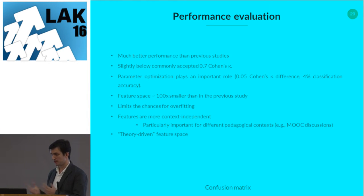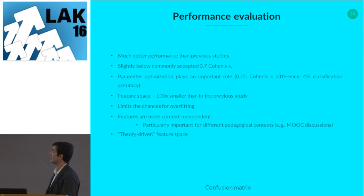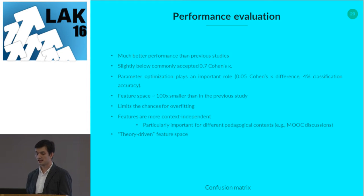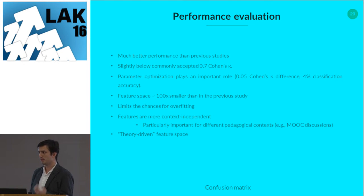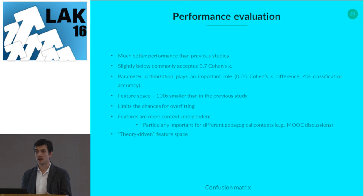Looking at overall performance, we see much better results than previous studies. We're very close to kappa 0.7, considered the acceptable level of coding agreement for practical use. Parameter optimization played an important role — contributing about a 0.06 kappa difference. The feature space was about 100 times smaller: previous work had around 15,000 features; now we have around 200. These features are much more generic — measuring cohesion is applicable across different course contexts, not just computer science — so we're more optimistic they'll work in practice.